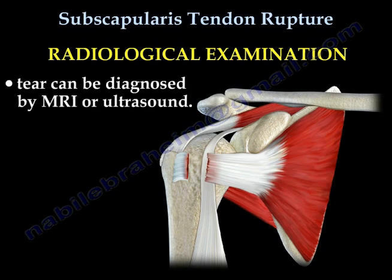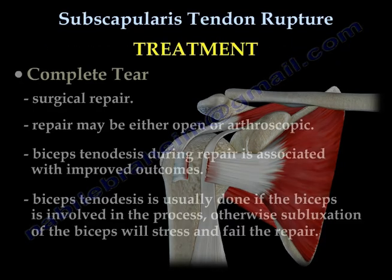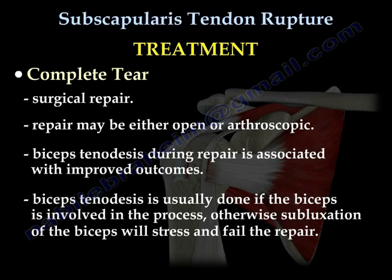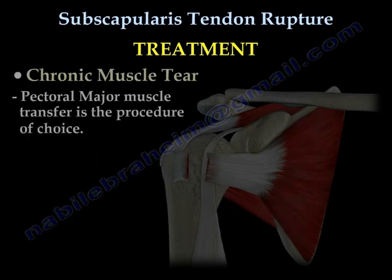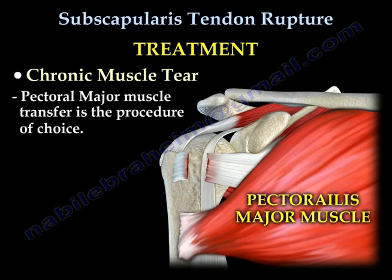Radiological examination: a tear can be diagnosed by MRI or ultrasound. Treatment for a complete tear is surgical repair, which may be either open or arthroscopic. Biceps tenodesis during repair is associated with improved outcomes and is usually done if the biceps is involved. Otherwise, subluxation of the biceps will stress and fail the repair. For a chronic muscle tear, pectoral major muscle transfer is the procedure of choice.